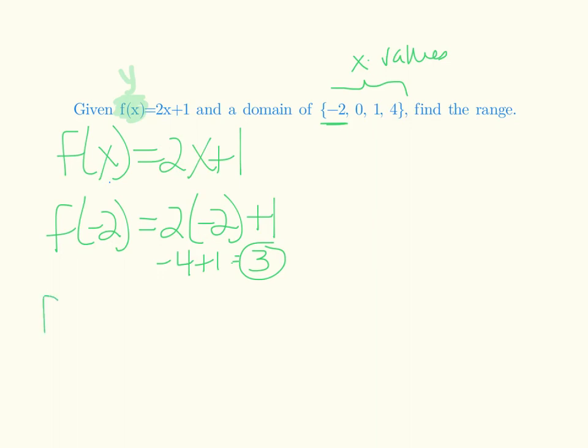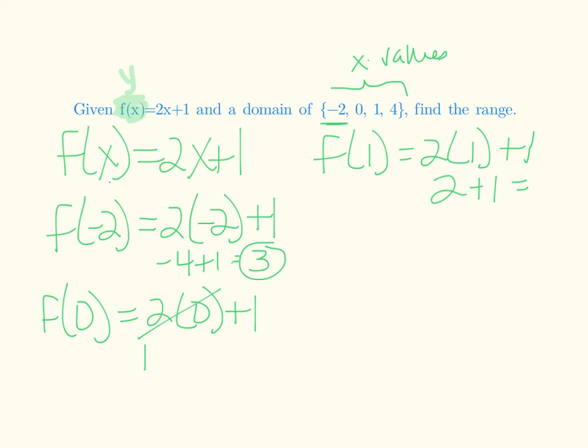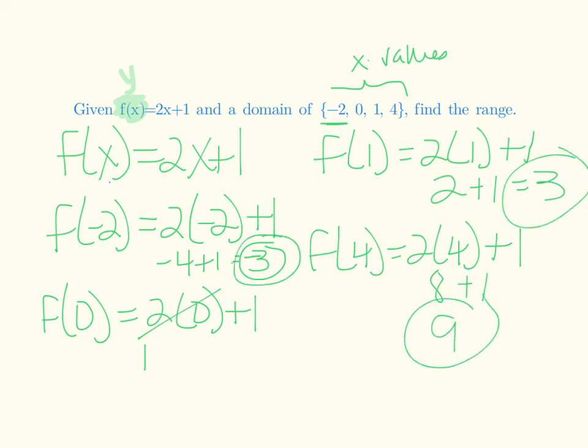Now we're going to go through and do a 0. So we have 2. And instead of X, I'm going to put a 0. We know that's 0. So my answer is 1. And now we're going to go to 1. So 2. And instead of the X, we put a 1 value. So we have 2 plus 1 equals 3. That's a negative 3 over here. Sorry. And then the 4. So 2 times 4 plus 1. So 8 plus 1 is 9. So these are all my answers.